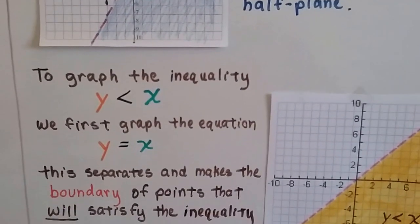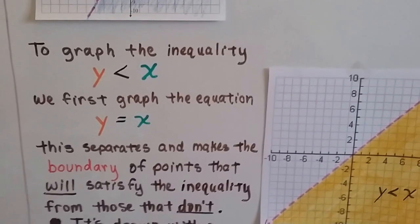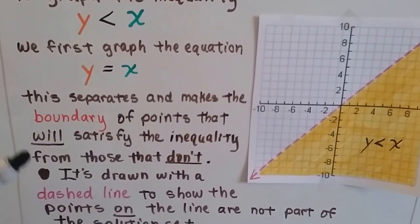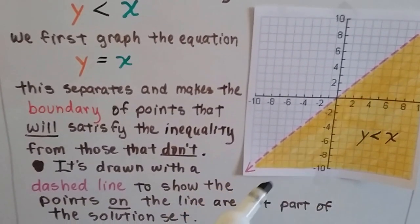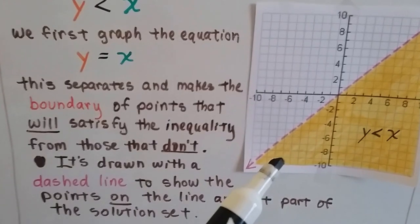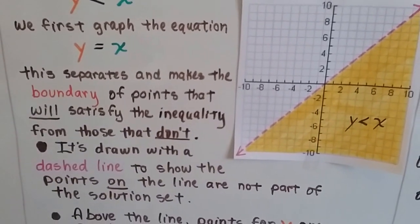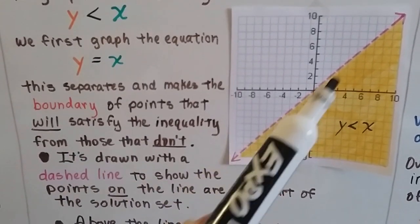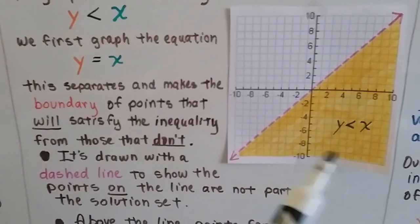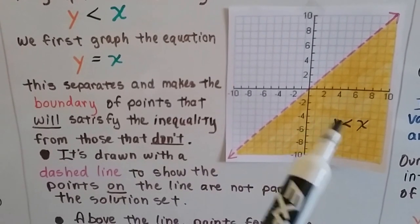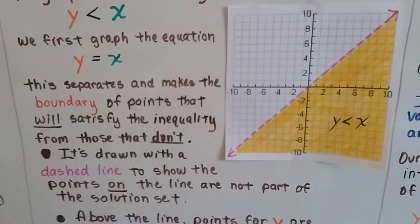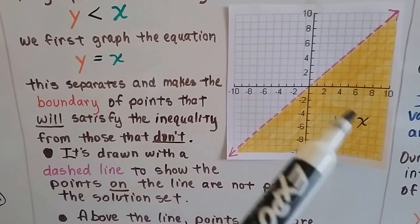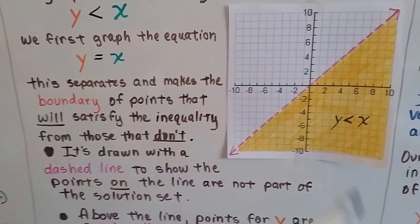To graph the inequality y is less than x, we first graph it as y equals x. Now this is going to separate and make the boundary of points that will satisfy the inequality from those that don't. And it's drawn with a dashed line to show the points on the line are not part of the solution set. So here's our line, our boundary line, and all the yellow part is where y is less than x. So any point that's in the yellow section, the yellow region here, is where y is less than x.